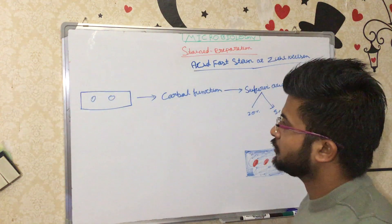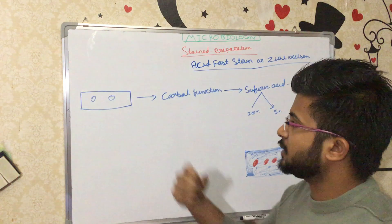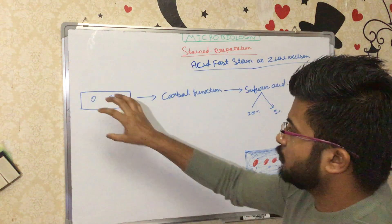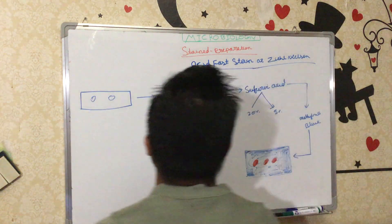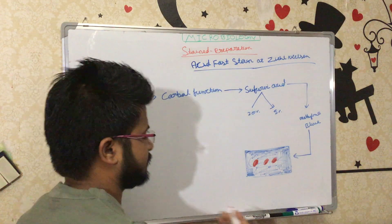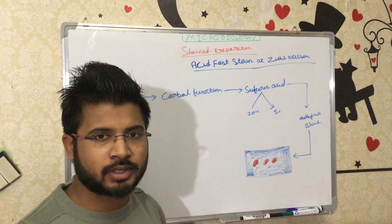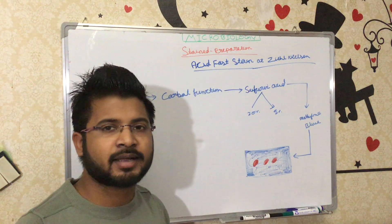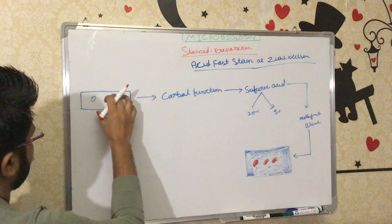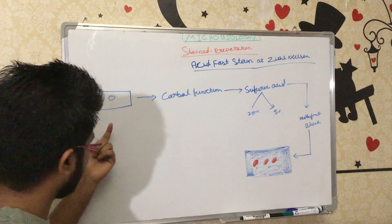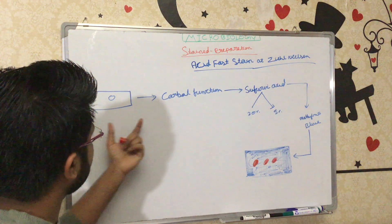Similar to the gram staining process, first we take the smear on the slide and we put the sputum. For example, if any patient is suspected to have tuberculosis, we take the sputum from the patient and put it on the slide, followed by heat fixation.